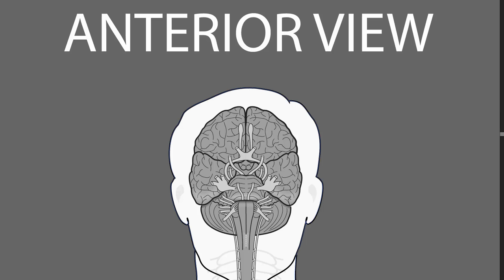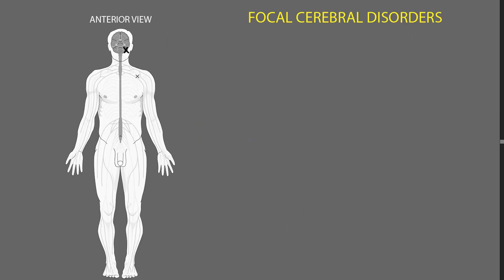Recall that focal abnormalities of the cerebellum — if we have one spot of dysfunction somewhere in the cerebellum — that can cause incoordination, particularly of limb movements, like the arm or the leg.